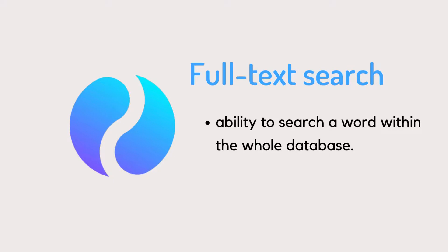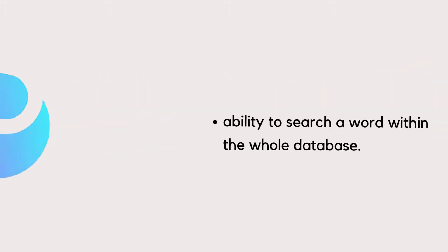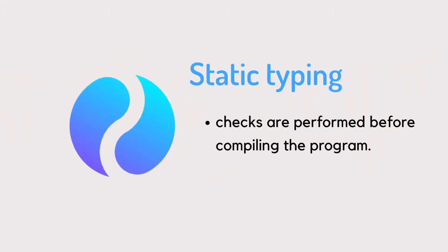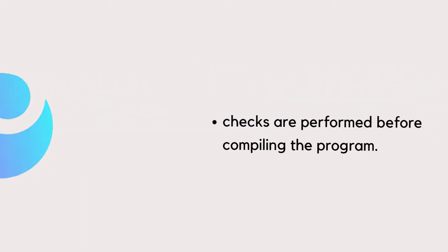Another important feature is full-text search, which is a comprehensive search method that compares a word being searched against every word within the document or database, which is pretty cool. And lastly, ESA provides static typing, which essentially means that checks are made to detect errors quickly and reduce the time spent on debugging for the developer.